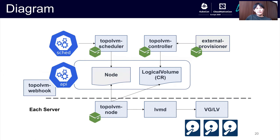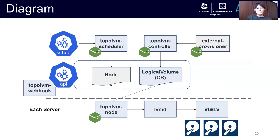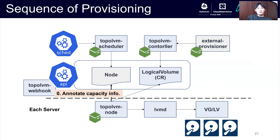Let me show you the details of TopoLVM. Here is a diagram of TopoLVM. In this figure, the blue square boxes are TopoLVM components and the round cut boxes indicate the API resources. SCEP and API means Kube scheduler and Kube API server respectively. The external provisioner is the sidecar container that watches persistent volume claims and calls the CSI driver's API to create and bind persistent volumes. Let's check out the dynamic provisioning sequence by TopoLVM.